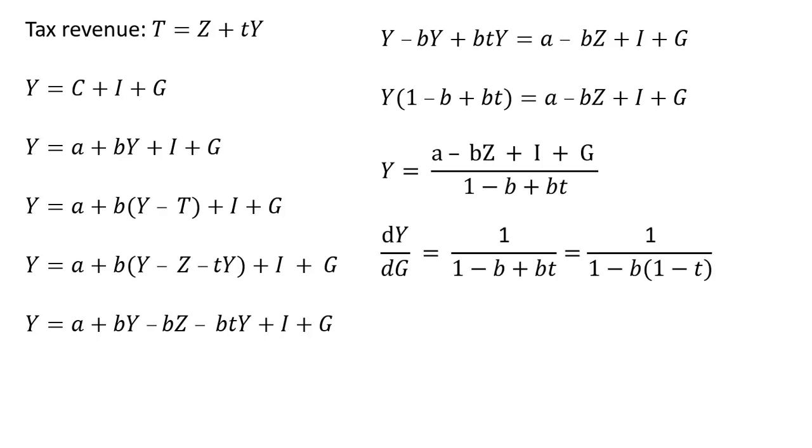Now taking the derivative of this equation with respect to G will give us the government spending multiplier. So the derivative here of G is just 1, and that's going to be divided by what we have in the denominator. Okay, that's it.